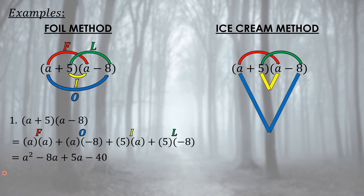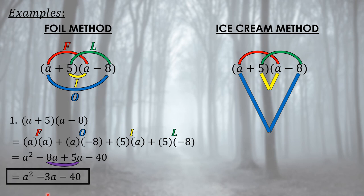Now combine like terms. Negative 8a and positive 5a have the same variable and exponent (1). Since the signs differ, we subtract: 8 minus 5 = 3, and we copy the sign of the bigger number (8), so the result is negative 3a. The final answer using FOIL is a squared minus 3a minus 40.